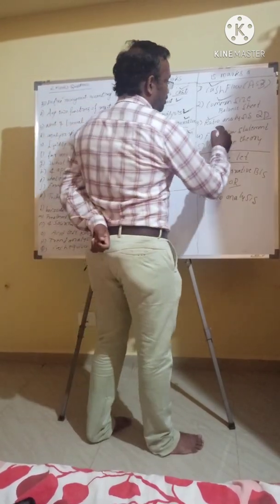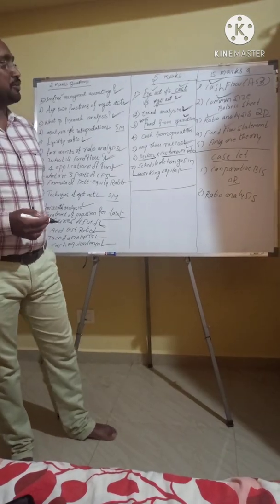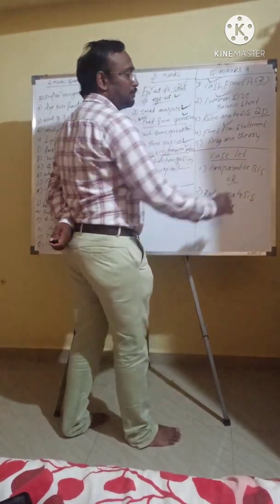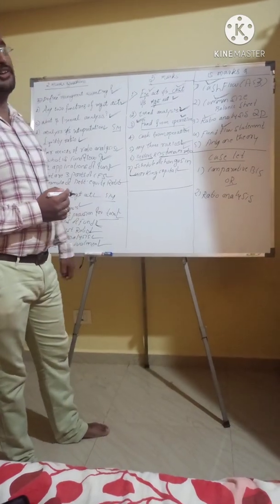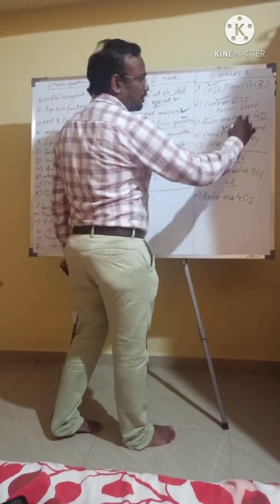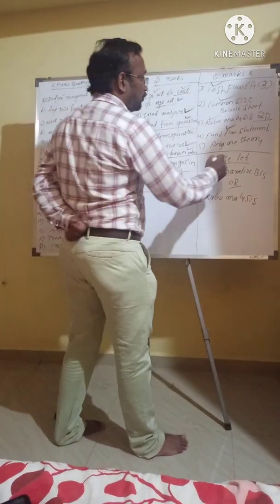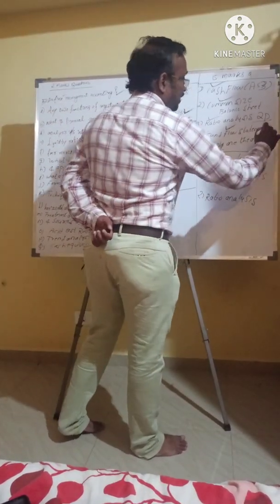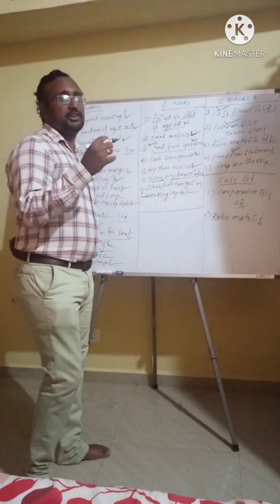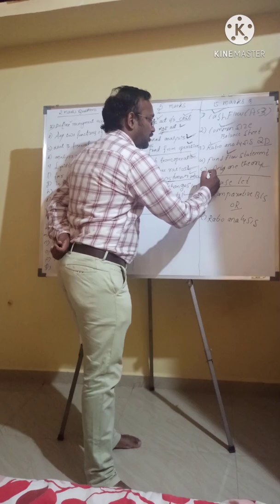Fund flow statement — the important steps are: schedule of changes in working capital, fund from operation, preparation of ledger accounts, and the fund flow statement itself. There is also one theory question — explain the objectives, functions and techniques of management accounting.